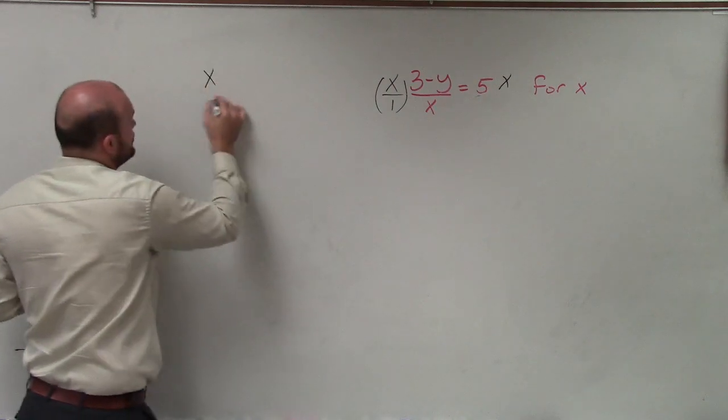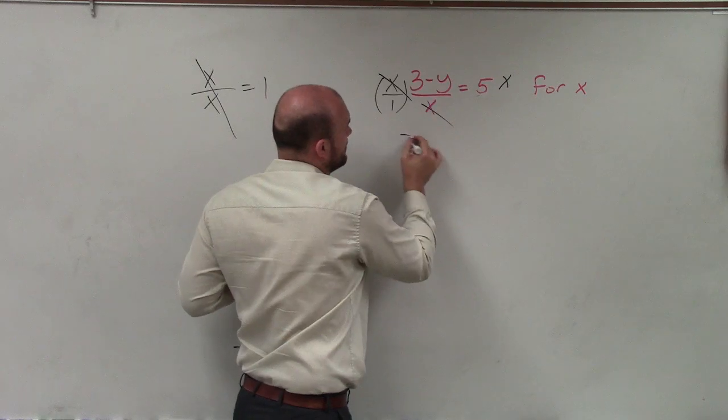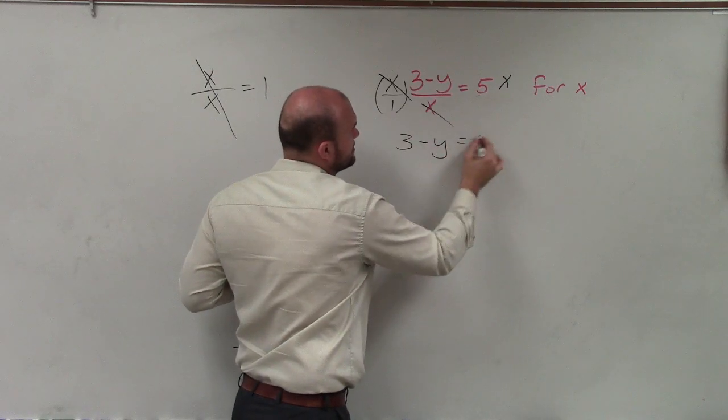And any time you have x in the numerator and x in the denominator, that equals 1. So therefore, I'm left with 3 minus y equals 5x.